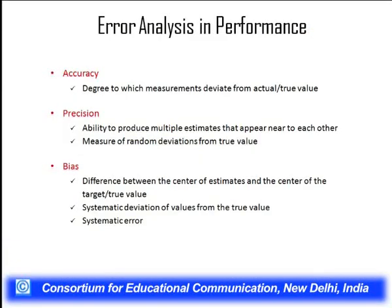Biasness is the difference between the center of the estimates and the center of the true or target value. If the average of the estimates is compared with the true value and the difference is too much or too little, it needs to be regulated and monitored. The systematic deviation of values from the true value is biasness, and it is helpful for giving a systematic error analysis.